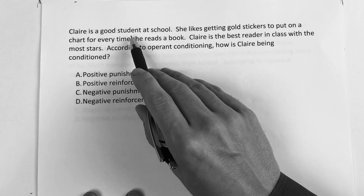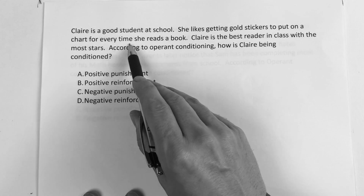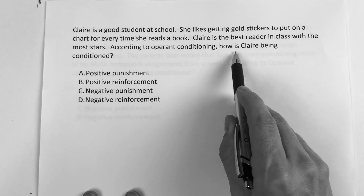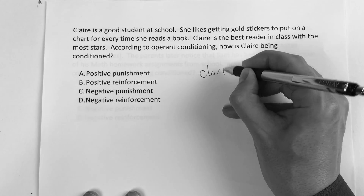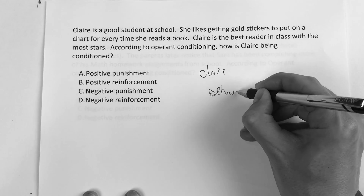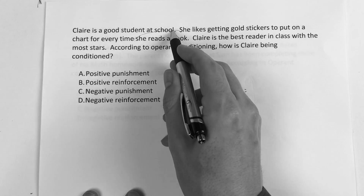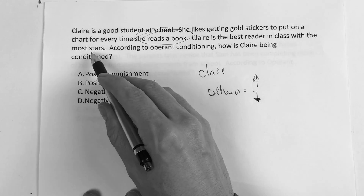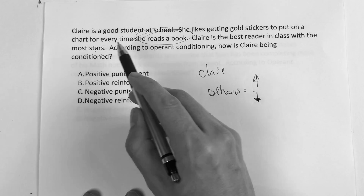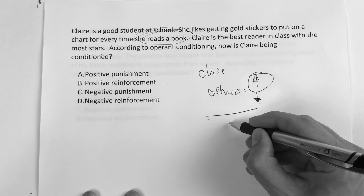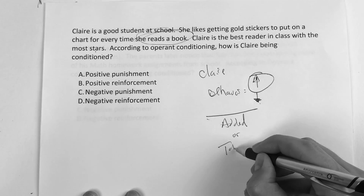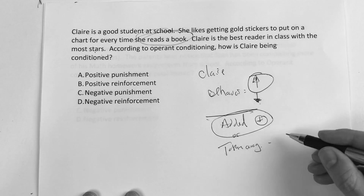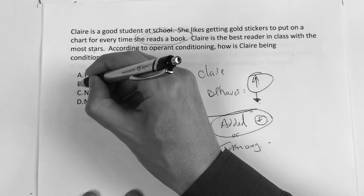This one says: Claire is a good student at school. She likes getting gold stickers to put on a chart every time she reads a book. Claire is the best reader in class with the most stars. According to operant conditioning, how is Claire being conditioned? The behavior is reading a book, and every time she reads a book she gets a sticker. She's the best reader with the most stars, so the behavior went up. She kept getting stickers — something was given to her — so this is a positive reinforcement. Answer choice B.